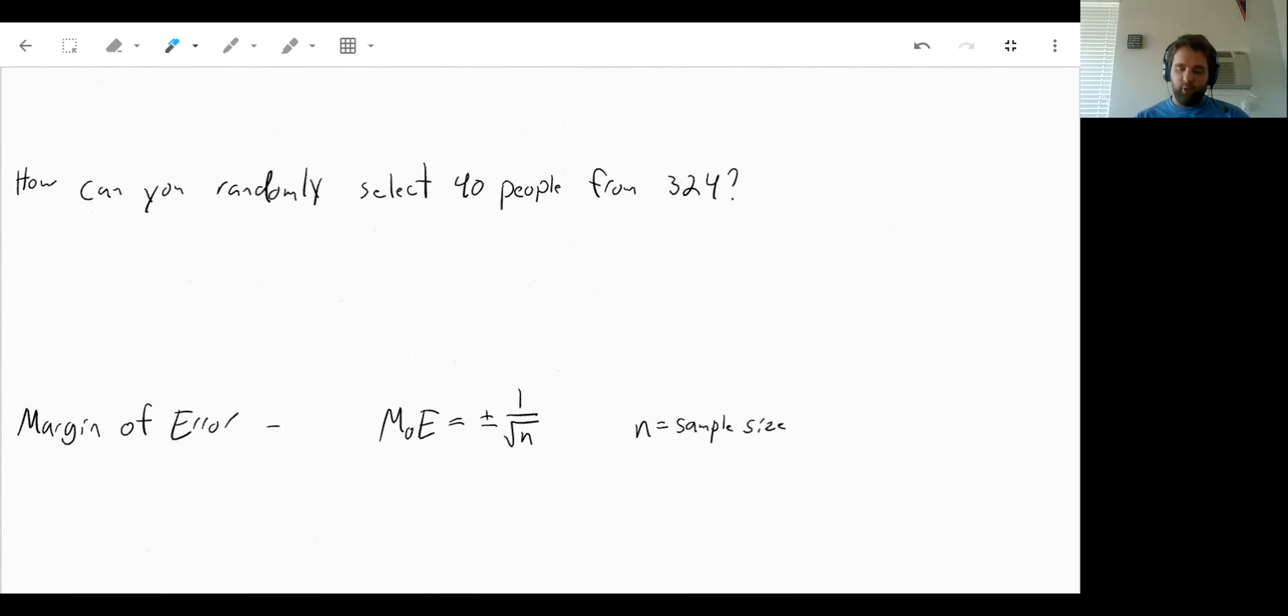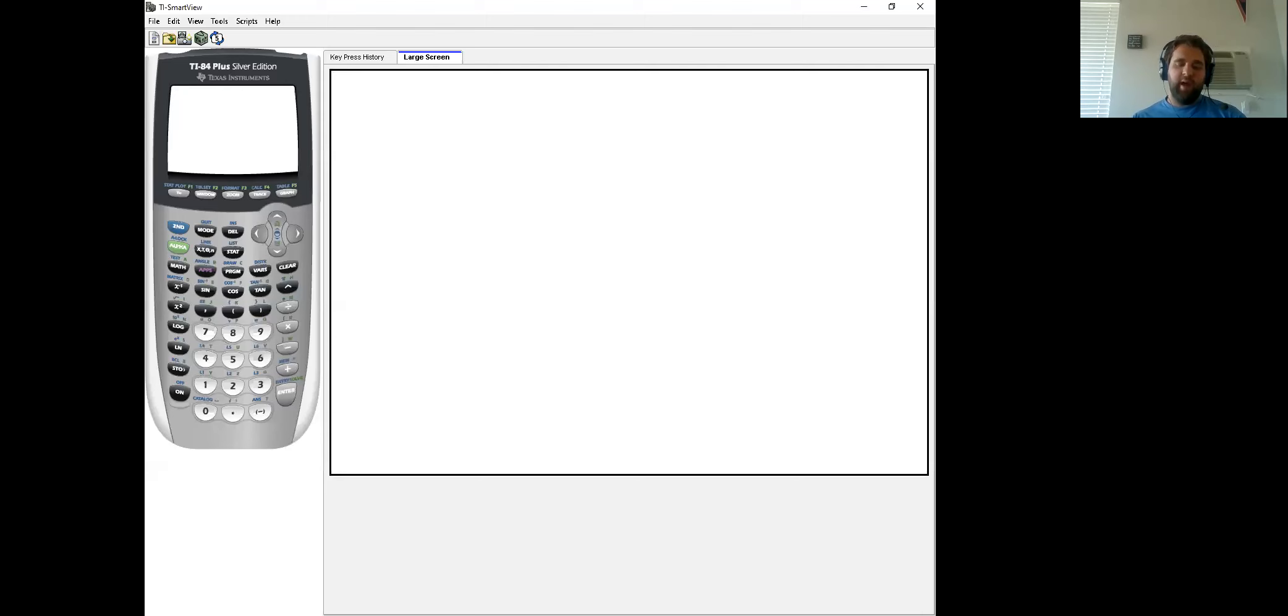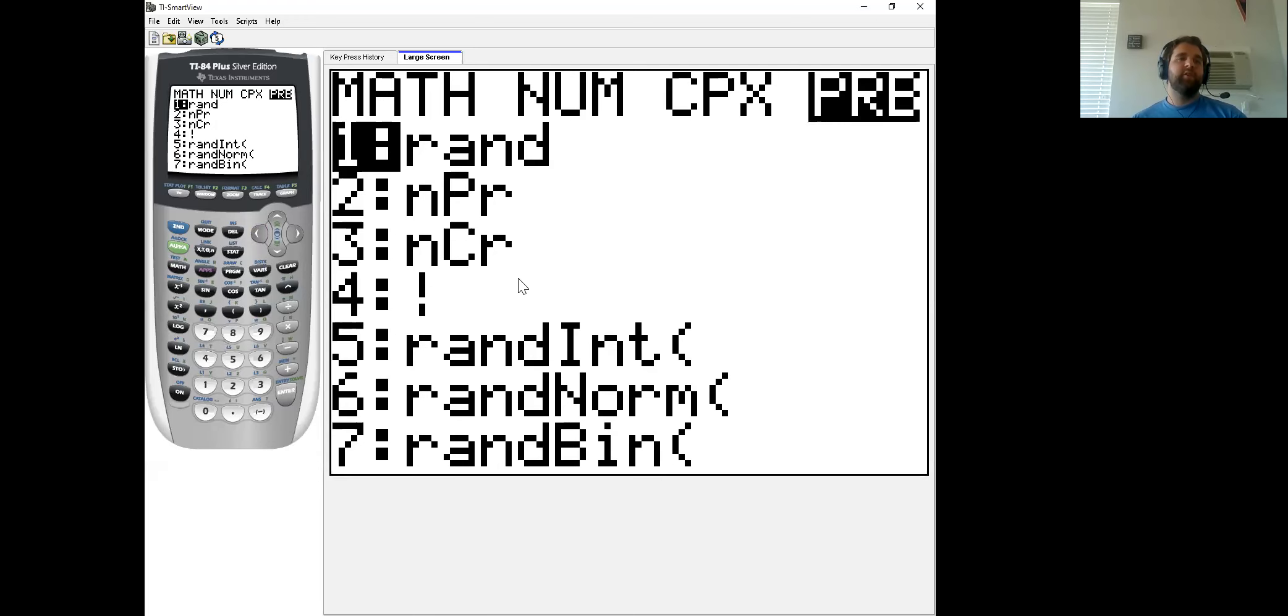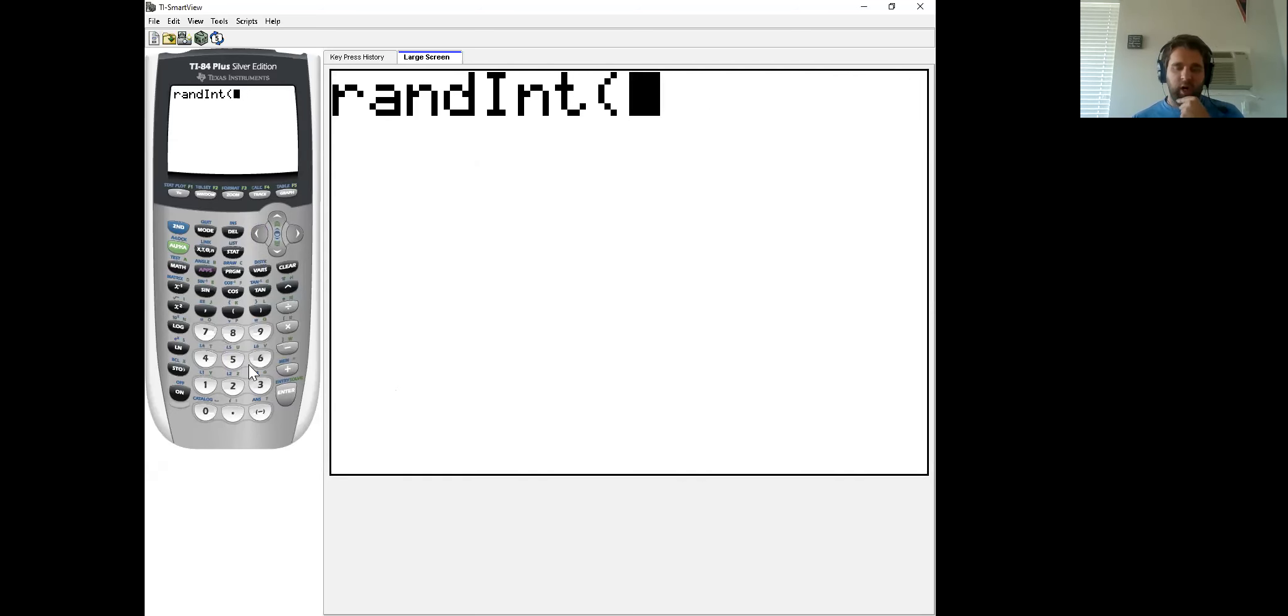So if we want to randomly select 40 people from 324, well, what I would do here would be, we're going to use our graphing calculator to figure this one out. So if we're going to use our graphing calculator to select people randomly, what we'll actually do is we'll come over here to math. And then we'll go back over to probability, PRB. And this time we're going to go down number five. Rand int. This stands for random integer. Now, our numbers for this, we have 324 people.